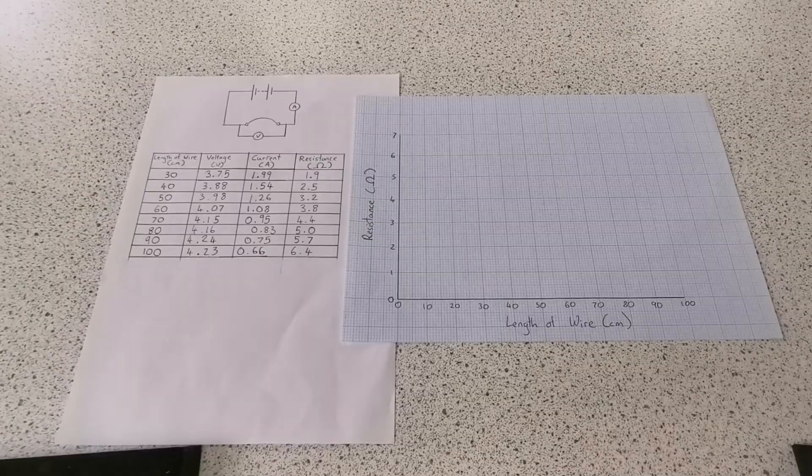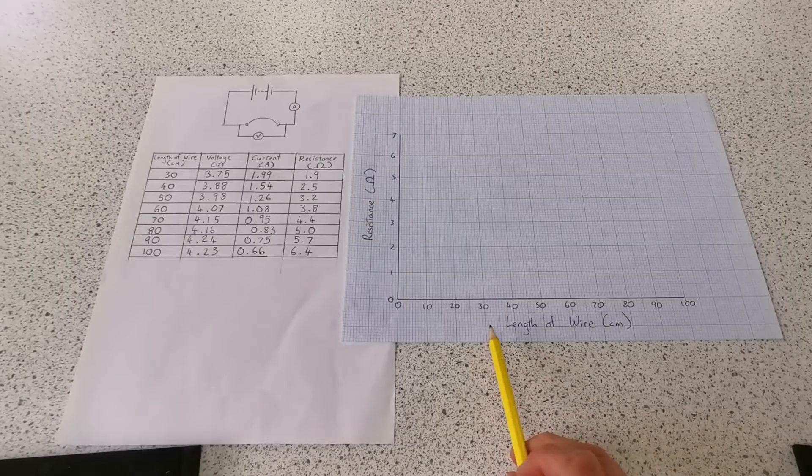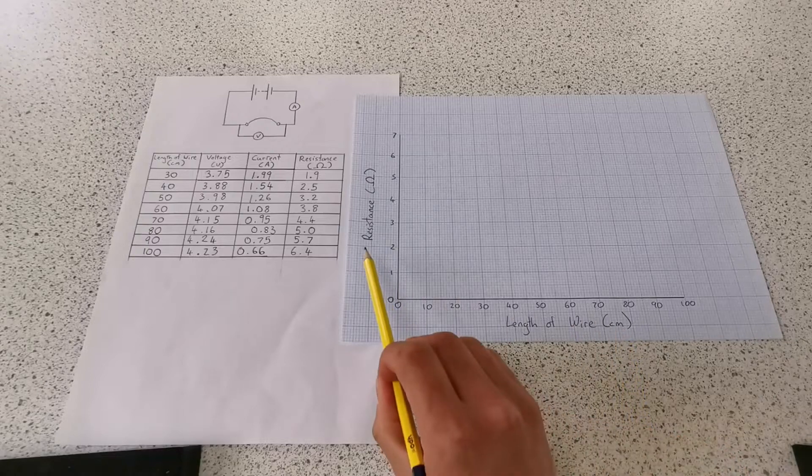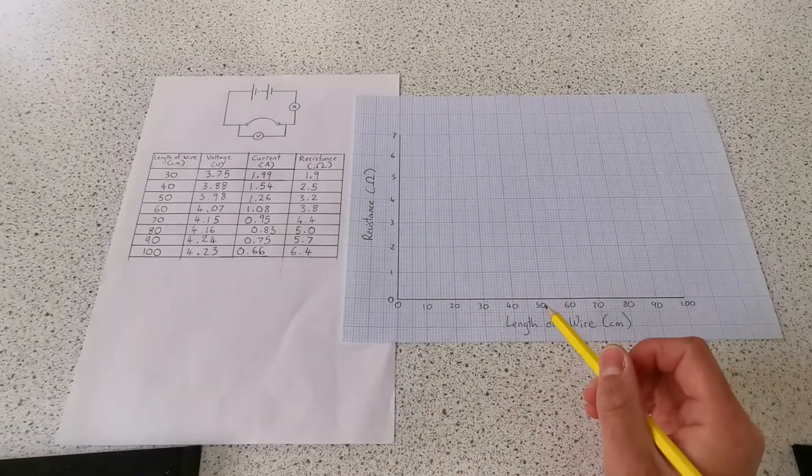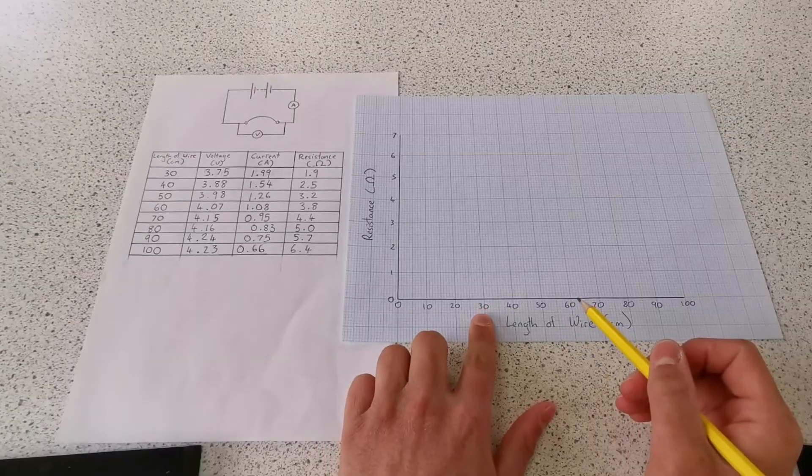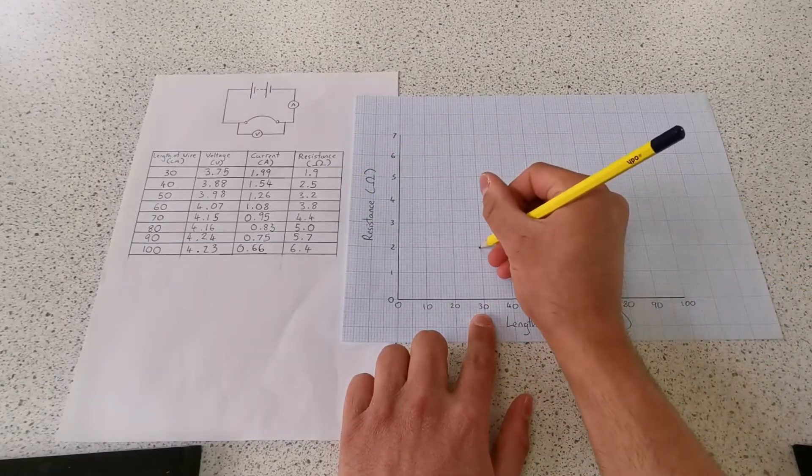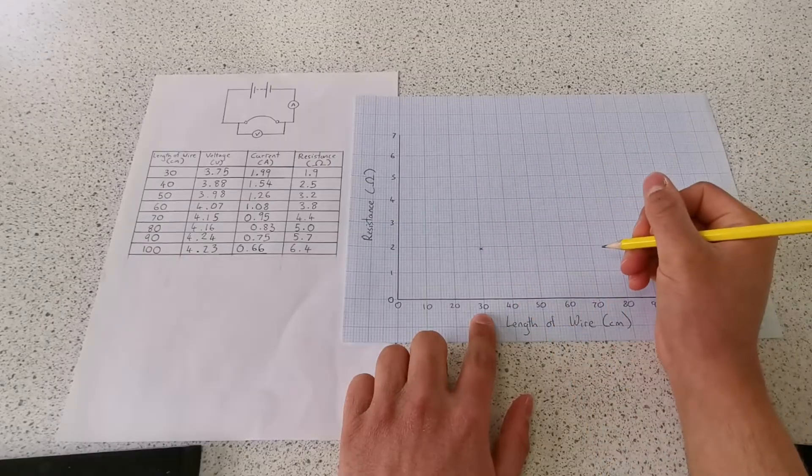Now I'm going to plot my results on a graph. As you can see here, along the x-axis I have the length of wire in centimeters, and along the y-axis I have the resistance in ohms. So at 30cm the resistance is 1.9, and I'm going to keep going.